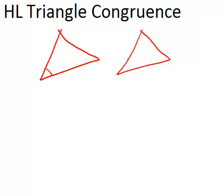So just a brief review, two triangles are congruent if all three pairs of angles are congruent, and also all three pairs of sides are congruent.